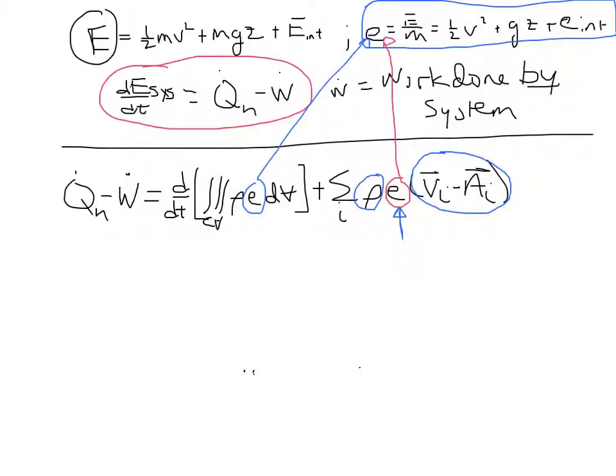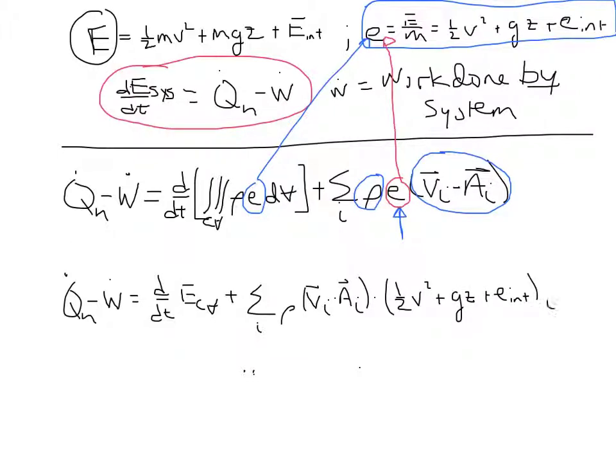So just rewriting this, I'll rewrite the flux term. This is really as far as we got on Friday. Just write this as d by dt of the energy of the control volume as a shorthand, plus the sum over the faces of rho, and I'll write v_i dot a_i first, times the sum of these three terms: one half v squared, plus gz, plus e internal, evaluated at each face i.